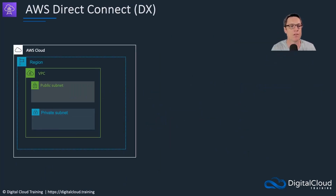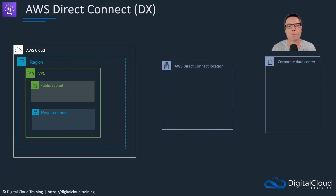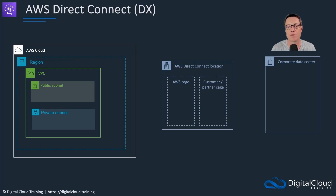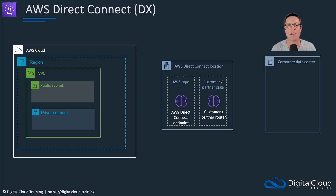Next, we have Direct Connect. Again, we have the AWS cloud with a region, a VPC, and a corporate data center. In between those, we have something called an AWS Direct Connect location. You'll want to find one that's relatively close to your corporate data center, because you then need to create a connection to that location. Within the Direct Connect location, there's an AWS cage — essentially containing AWS devices — and then a customer or partner cage with the customer or partner router.